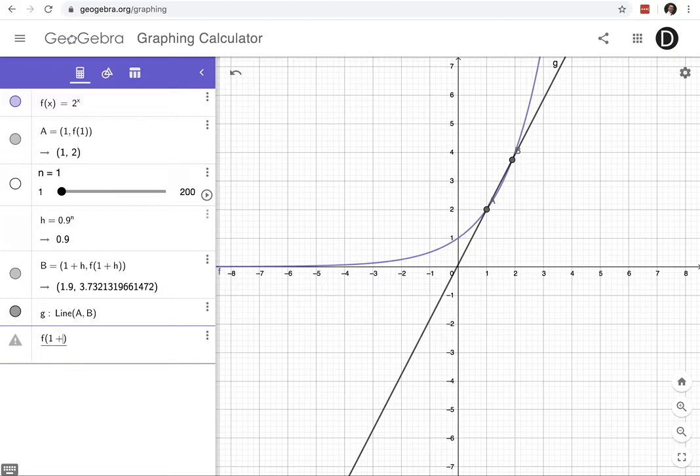Where I take f at 1 plus h, and I'll subtract f at 1. So those are the y values. So it's the B point's y value minus the A point's y value. And then I'm going to divide it by the B point's x value minus the A point's x value. And notice the ones will cancel and I'll just divide by h.